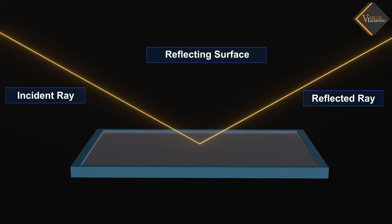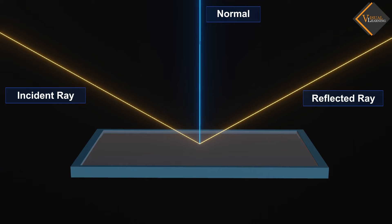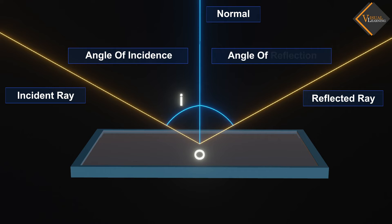If a perpendicular were drawn on a reflecting surface, it would be called the normal. The angle between the normal and the incident ray is called the angle of incidence and can be denoted by i. The angle between the normal and reflected ray is called the angle of reflection and can be denoted by r.